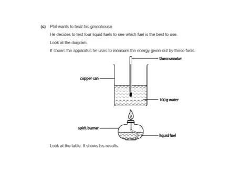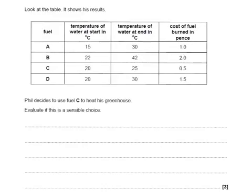This second question is quite similar. Phil wants to heat his greenhouse. He decides to test four liquid fuels to see which fuel is the best to use. Look at the diagram, it shows the apparatus he uses to measure the energy given out by these fuels. There's the same diagram of the same copper can and the same spirit burner with the fuels in. Look at the table, it shows his results. Phil decides to use fuel C to heat his greenhouse. Evaluate if this is a sensible choice.